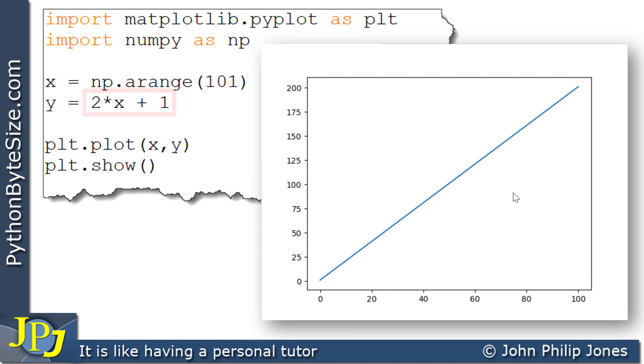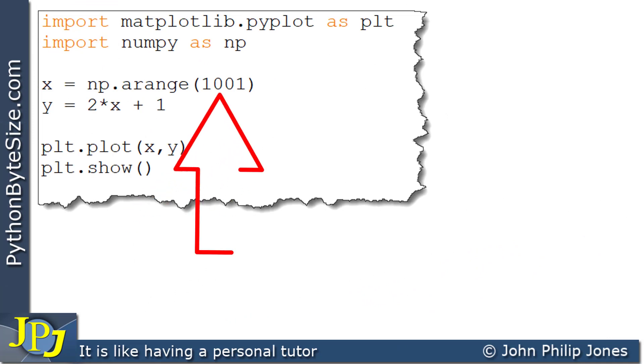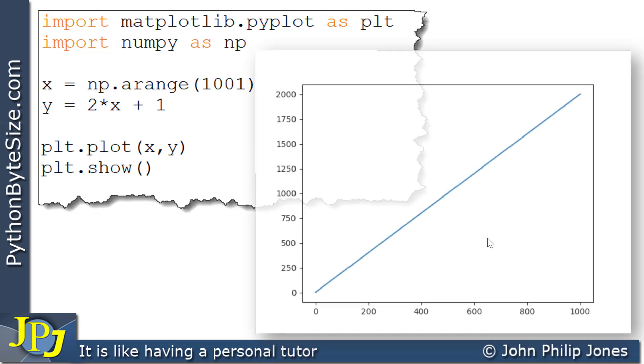And just for completeness, what I'm now going to do is to alter this 101 to 1001. Here's 1001. And so, now I'm expecting the X-axis to go from 0 to 1000. And this will calculate all of the values for X being 0 to 1000. And this will plot the graph. And, hopefully, you should, in your mind's eye now, be expecting to see what the graph is going to look like. So, let's run the program and see what we get.